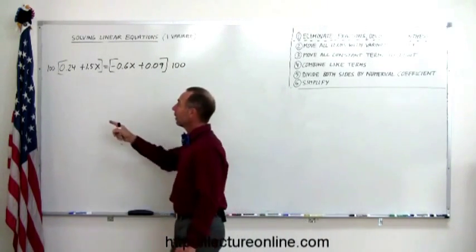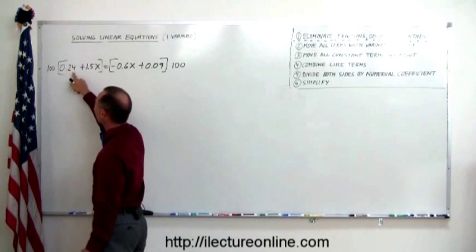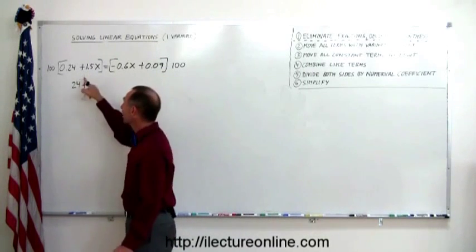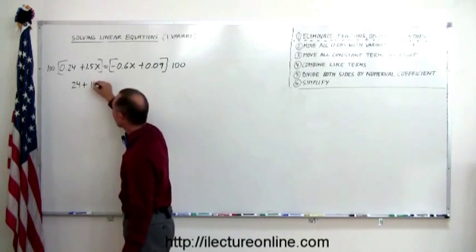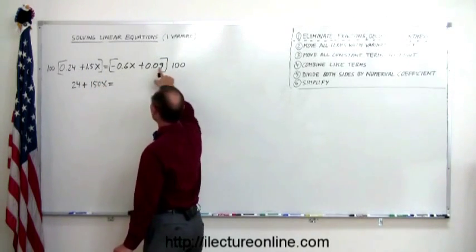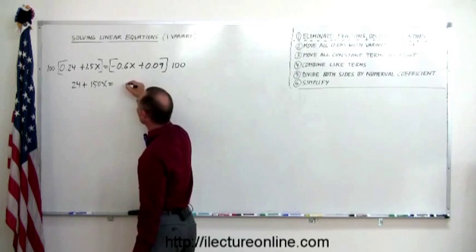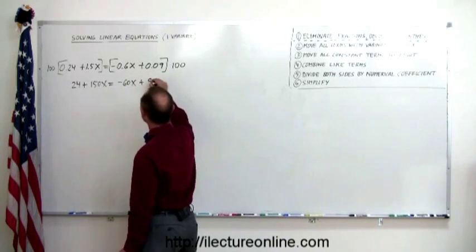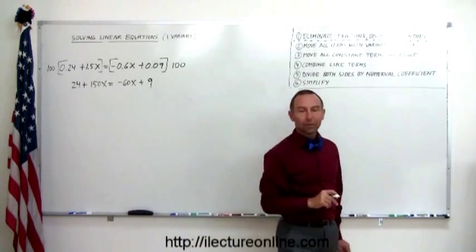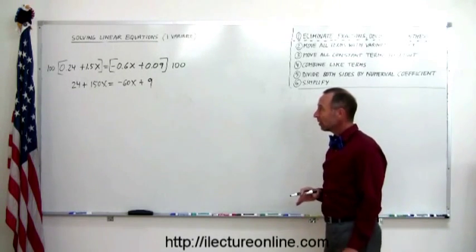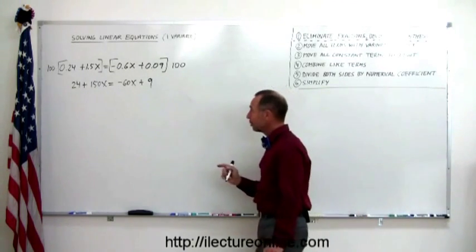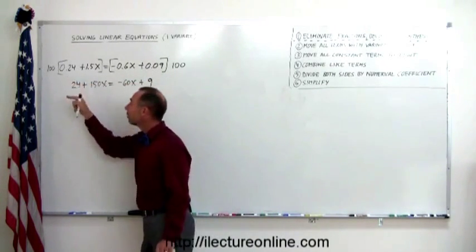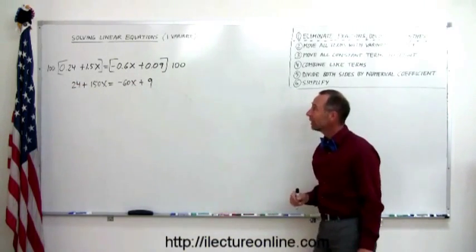So let's do that. 100 times 0.24, that moves the decimal place over two places. So this becomes 24 plus 100 times 1.5. Again, that moves the decimal place over two places. So this becomes 150x equals 100 times 0.6. Move the decimal place over two places. So that's minus 60x plus 100 times 0.09. Move the decimal place over two places. We get 9. So in one single step, we eliminate all the decimals. Always make sure that you multiply both sides of the equation with a one and the number of zeros that equates to the number of decimal places you find, the greatest number of decimal places you find in any one of the terms.